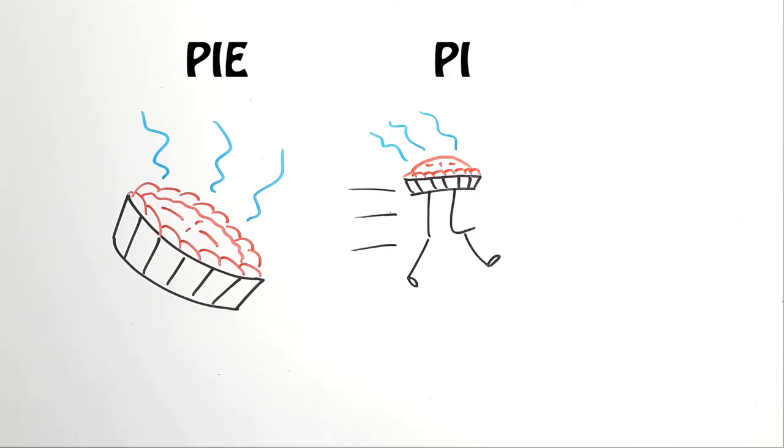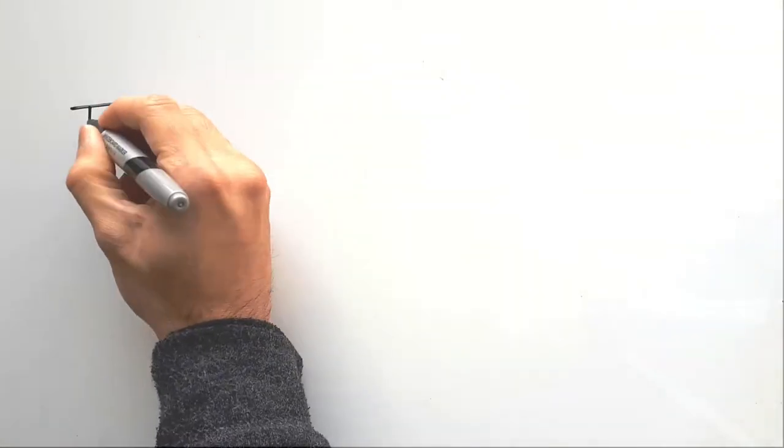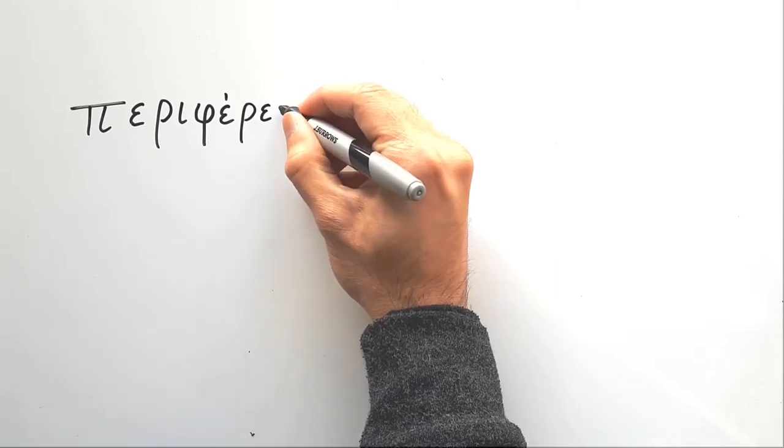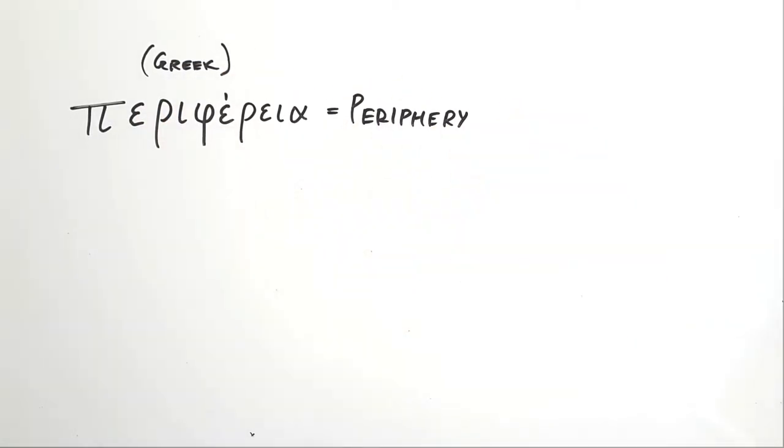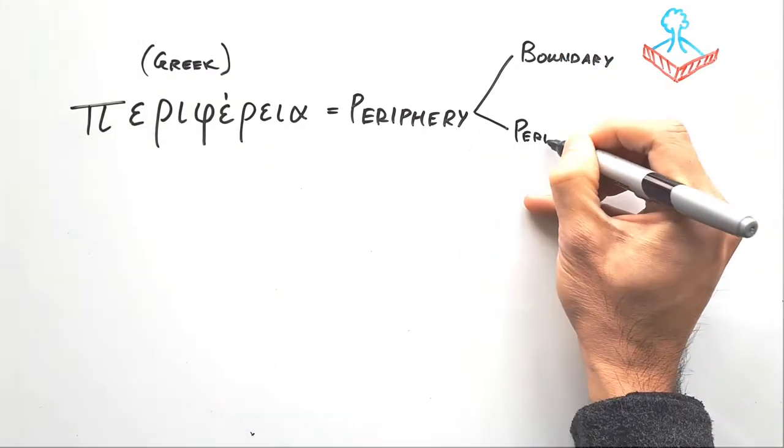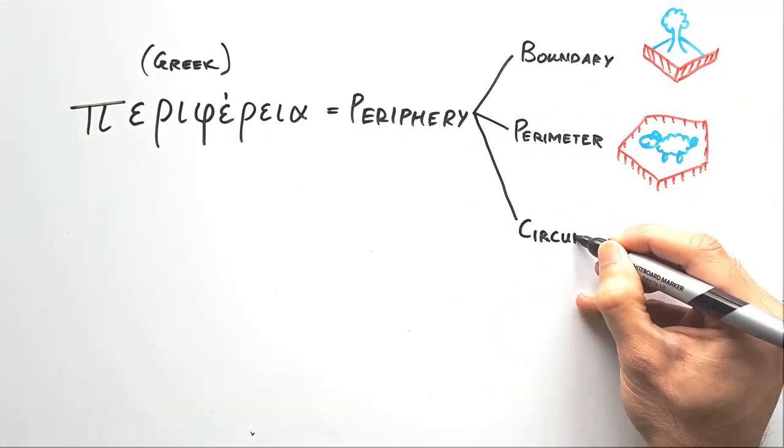Let's put away our food and talk about maths. Pi actually comes from the Greek word peripheria, which means periphery. It has many synonyms, three of which are boundary, perimeter, and circumference.